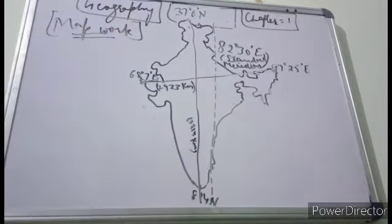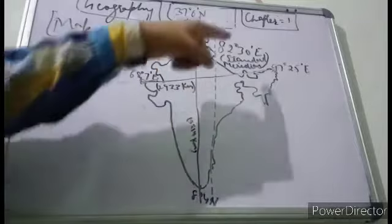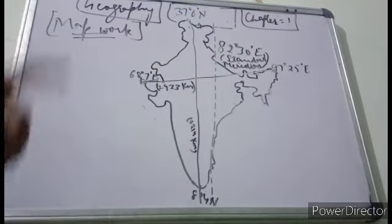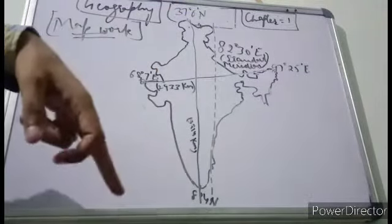In your books you can easily see there is a dotted line, and this dotted line is the location of the Standard Meridian at 82 degrees 30 minutes East.